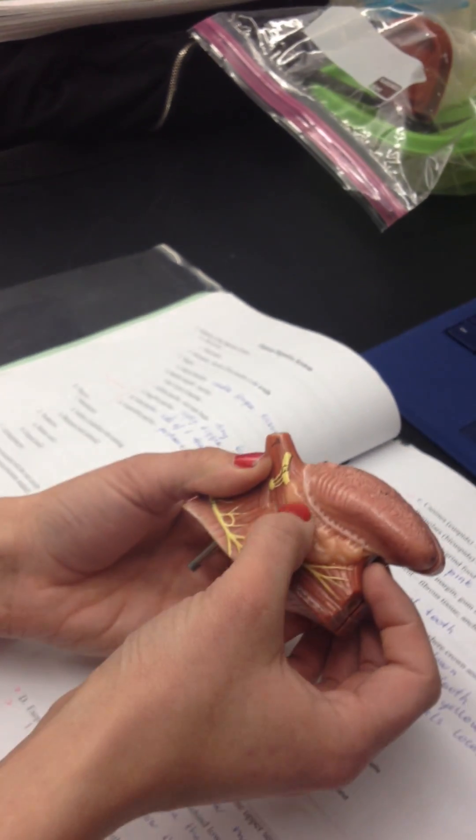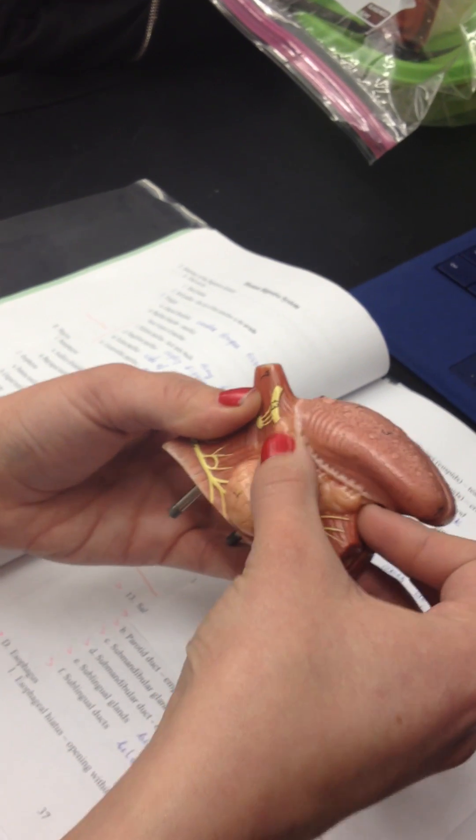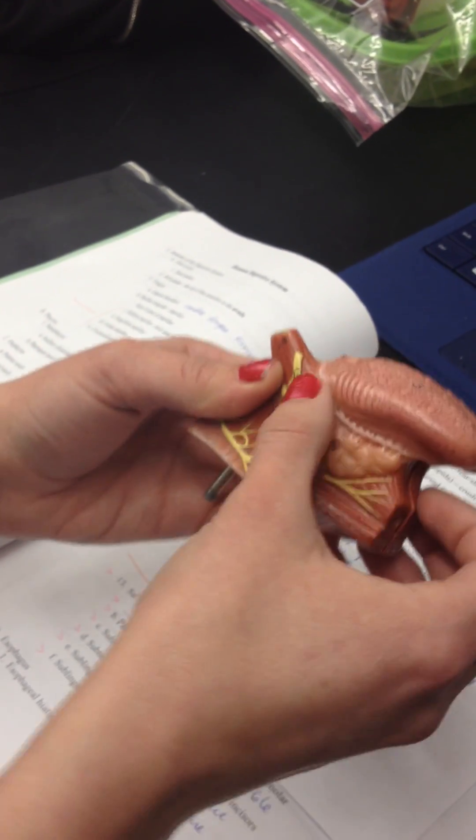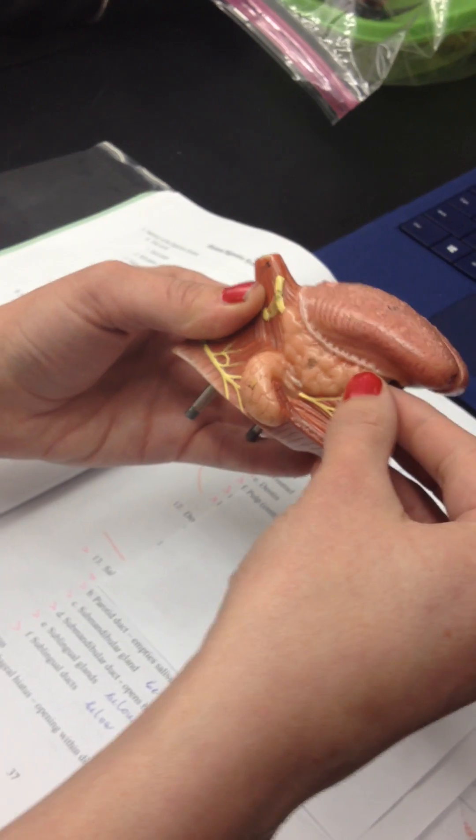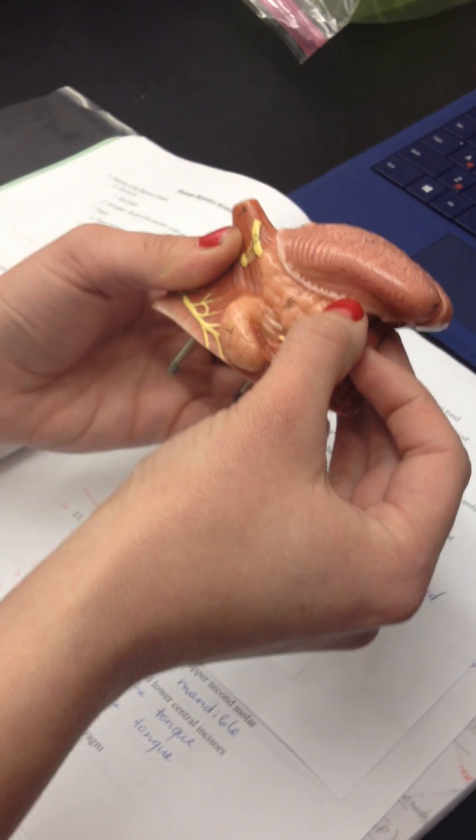Over here, you can see this is right underneath the tongue. This is going to be your sublingual gland, underneath the tongue. See that? So those little ducts, those are your sublingual ducts.